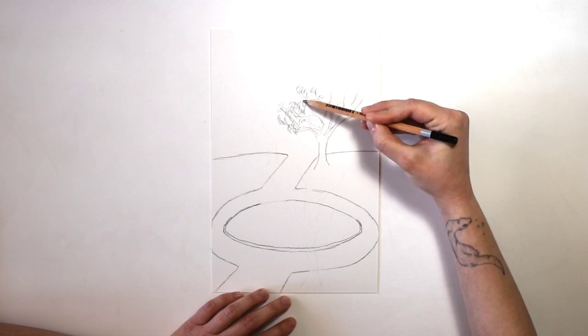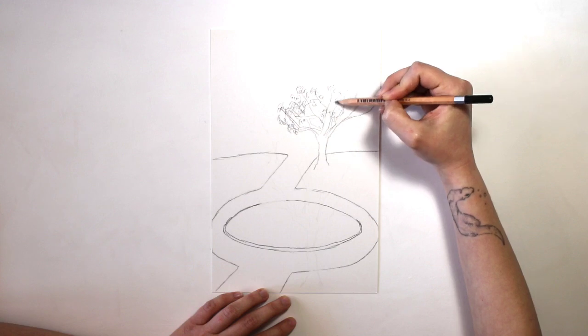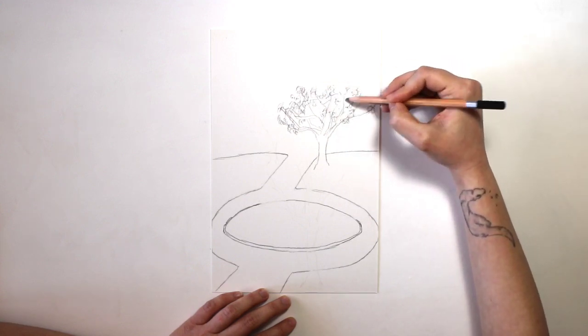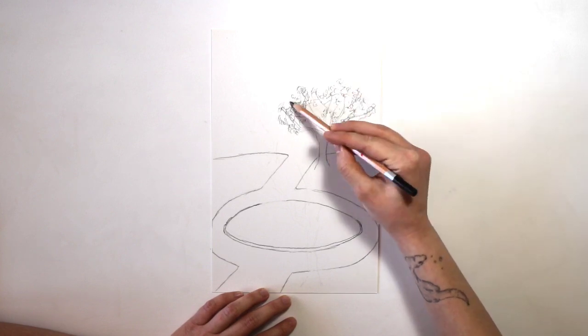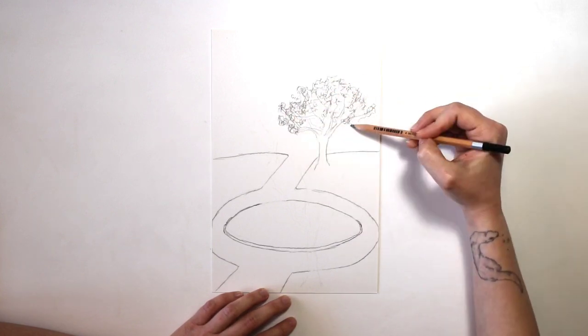Instead, I'm focusing on the overall shape that the leaves create. This is one of those times where you can edit what you're seeing slightly. The trees on my court might not have their leaves right now, but I wanted to add them in anyways because I'm really excited for them to grow.